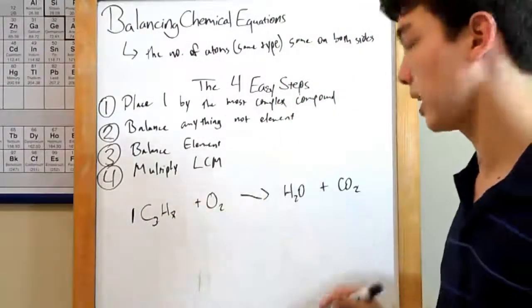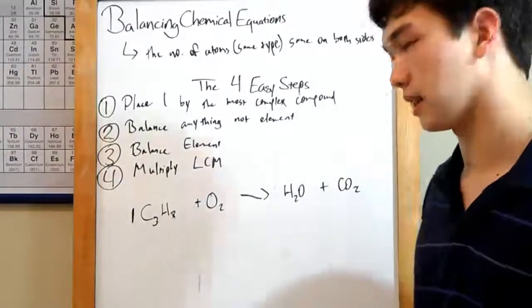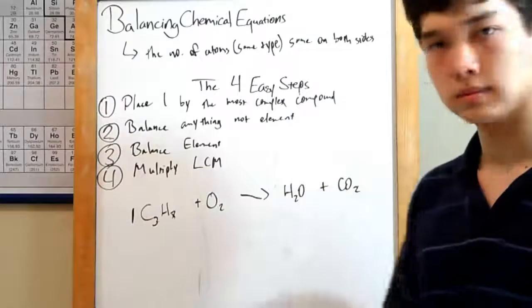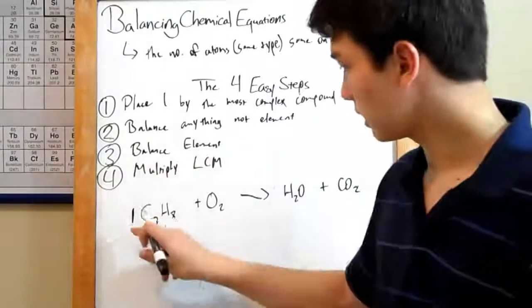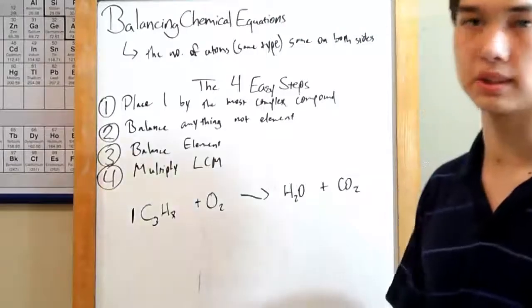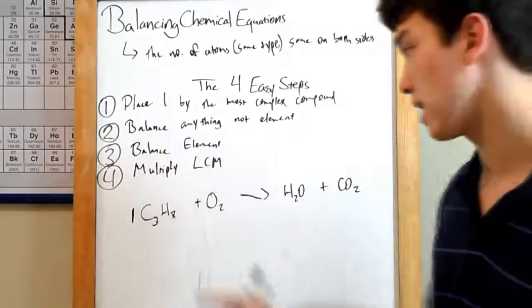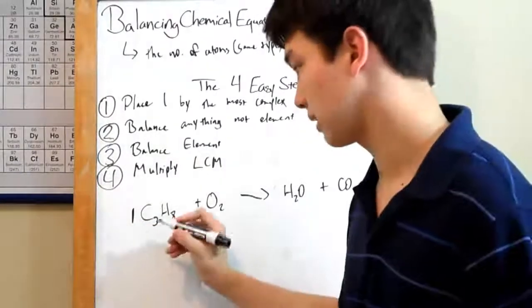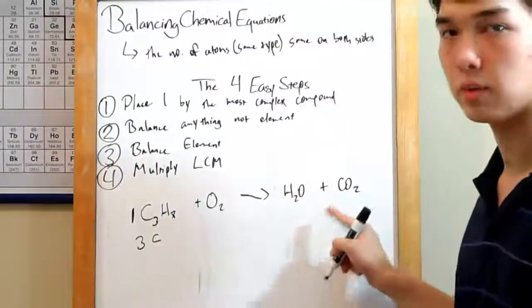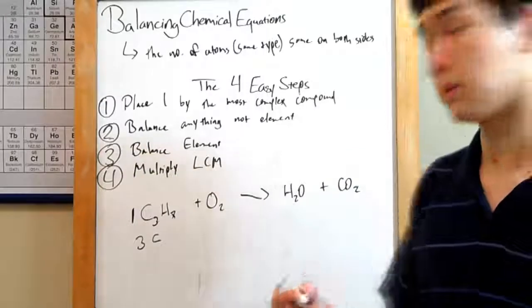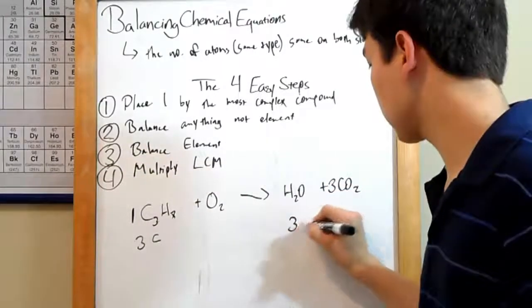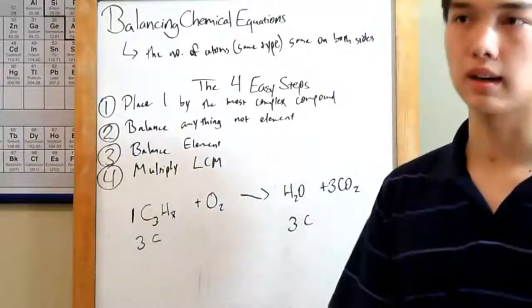Anything that is not an element. Well, oxygen is an element, so we're not going to worry about that. That leaves us with carbon and hydrogen. Let's start with carbon. This number is multiplied by these small subscript numbers to tell you how many of that particular atom you have. One times three is three. You have three carbons on this side. Over here, you've only got one. Three times one is three. So, we put a three over here by carbon dioxide. Now we have three carbons on this side, too. Great. Carbons are balanced.